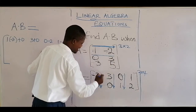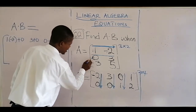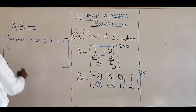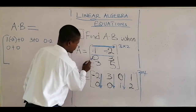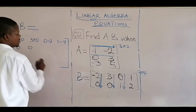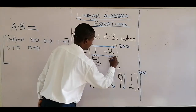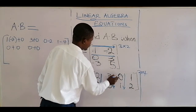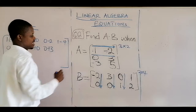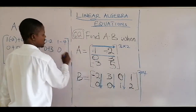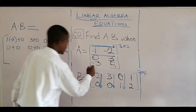Moving to the second row: 0 times minus 2 is 0, and 3 times 0 is plus 0. Then 0 times 3 is 0, and 3 times 0 is also 0. For the third column: 0 times 0 is 0, and 3 times 1 is plus 3. Finally, 0 times 1 is 0, and 3 times 2 is plus 6.